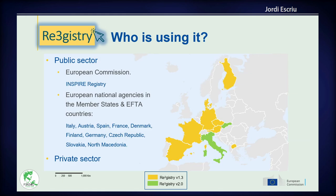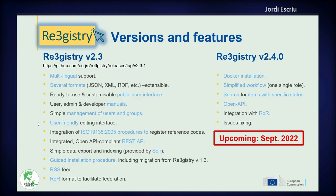Who is using it at the moment? It is mostly used by the public sector. The European Commission is using it, and the INSPIRE registry is using the registry software. A few member states are also using the registry — specifically Italy and Slovakia are using version 2. As Jordi mentioned, it can also be used by the private sector, and the information managed does not have to be geospatial.